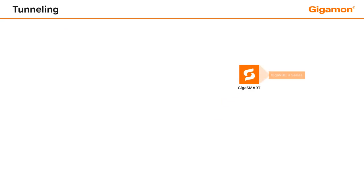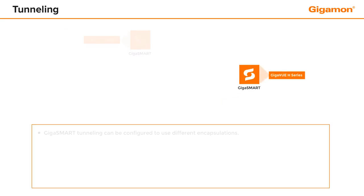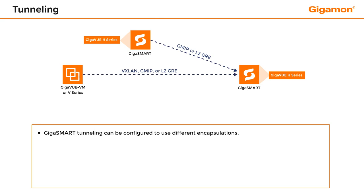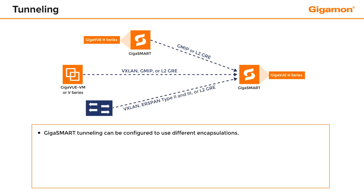GigaSmart tunneling can be configured to use different encapsulations, such as VXLAN, ERSPAN, or GRE. GigaSmart tunnels automatically fragment and reassemble oversized packets.